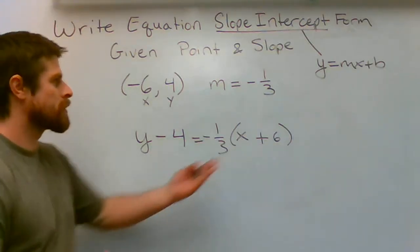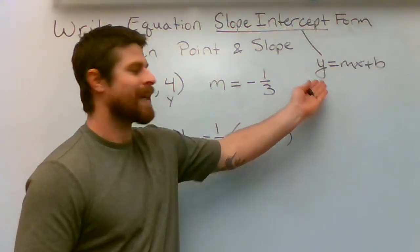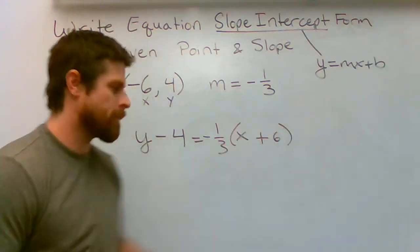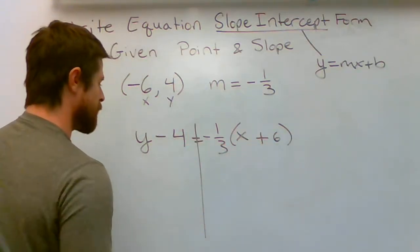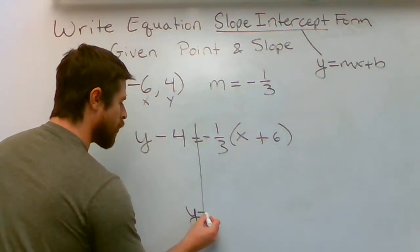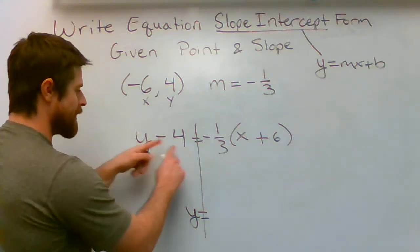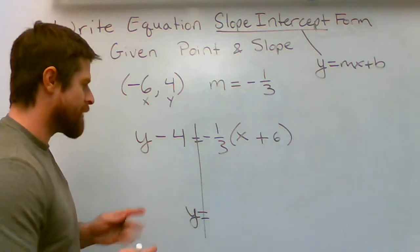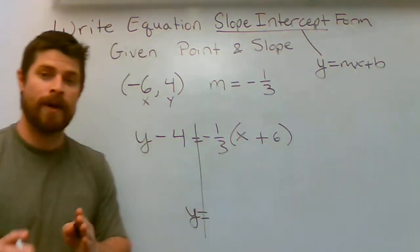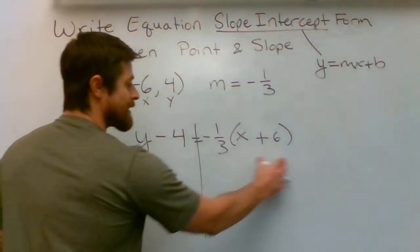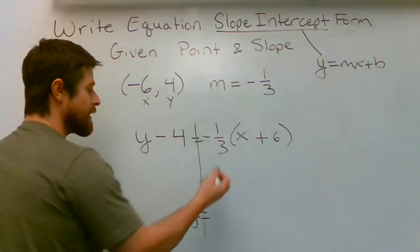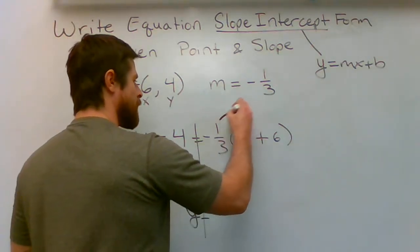Now, my goal is to get Y equals MX plus B, meaning I need to get Y all by itself. I'm going to draw a line right down the middle. I'm going to write down what my goal is. Y is the only thing I want on the left side. Right now I have a negative four. I can't have that. I'm going to need to move that over, but I'm not quite ready to do that because the right side of my equation is not simplified. What I need to do is use the distributive property.